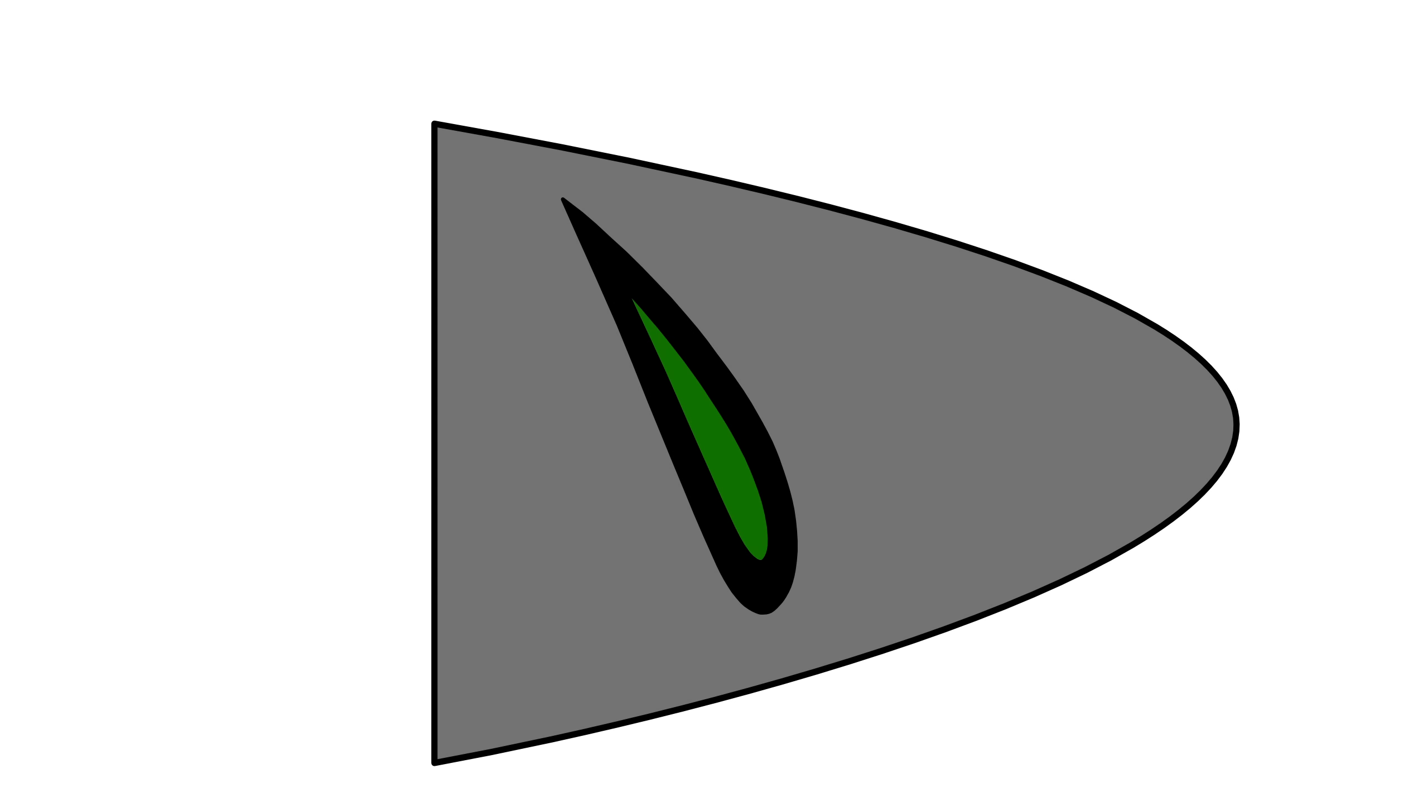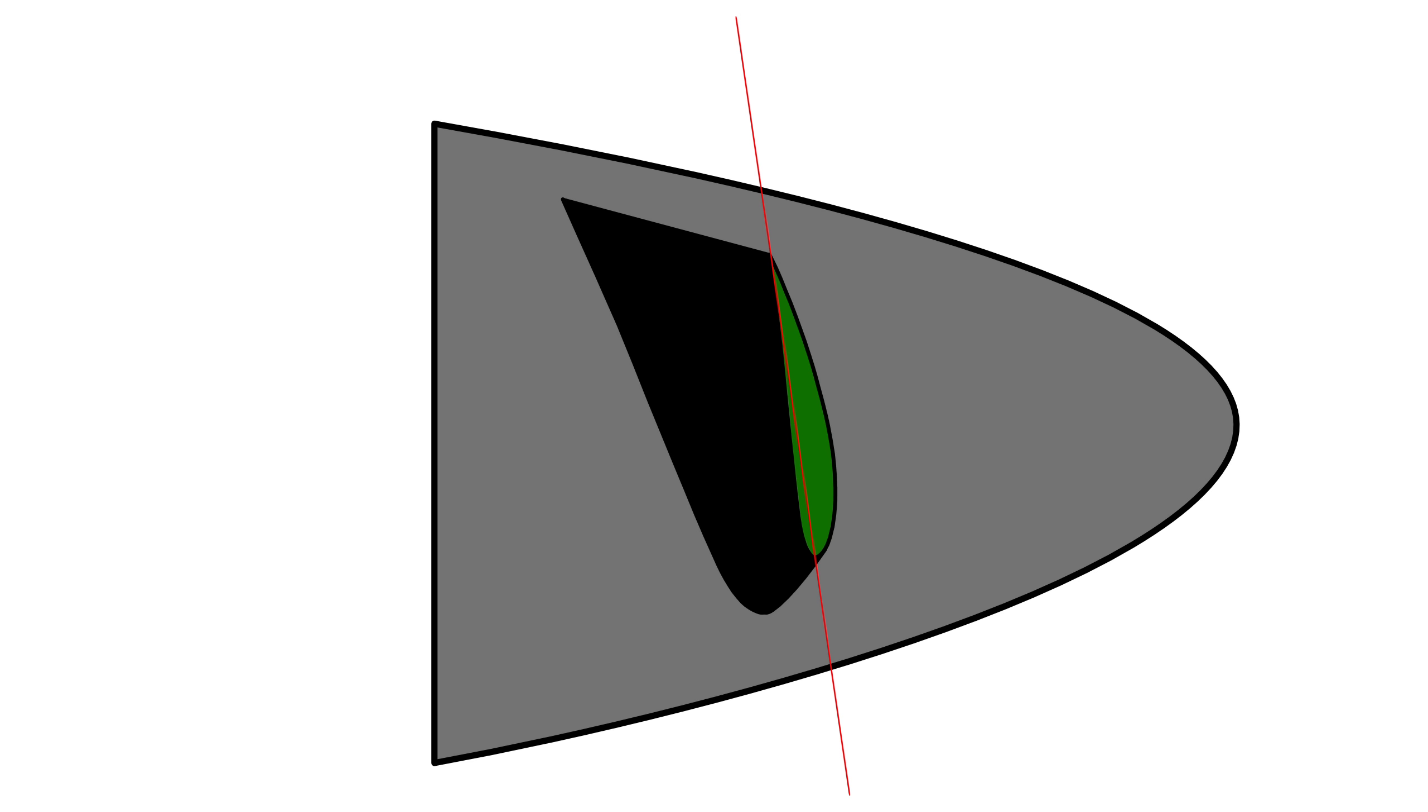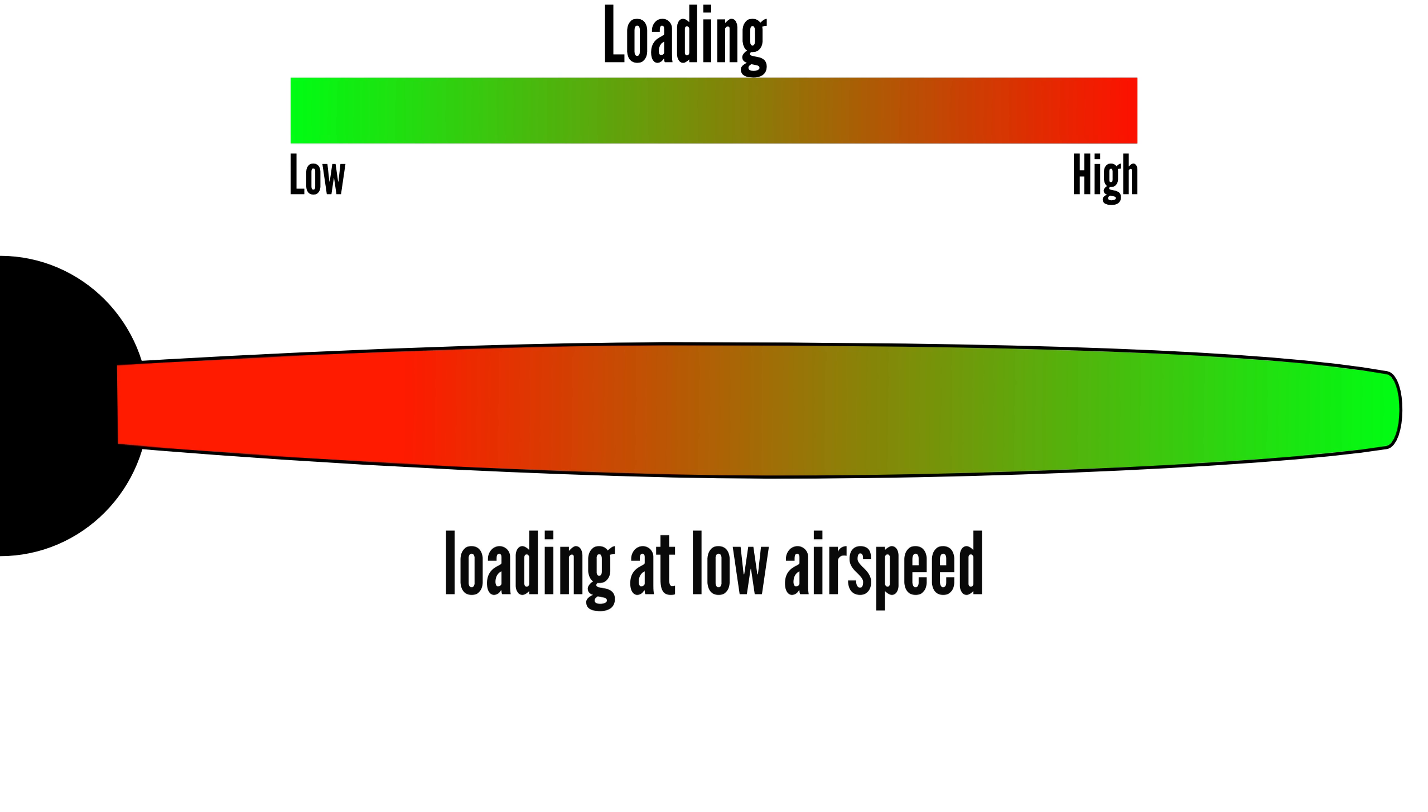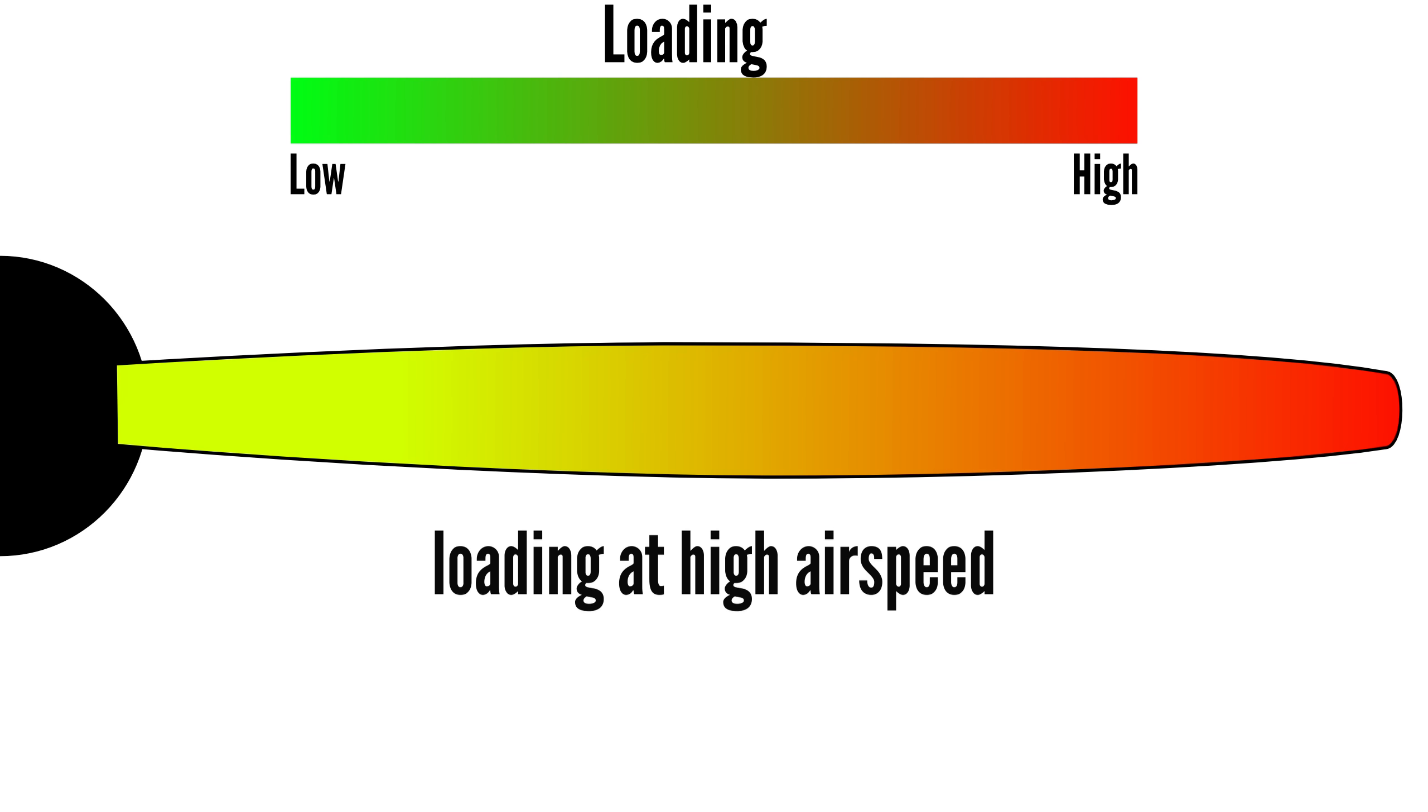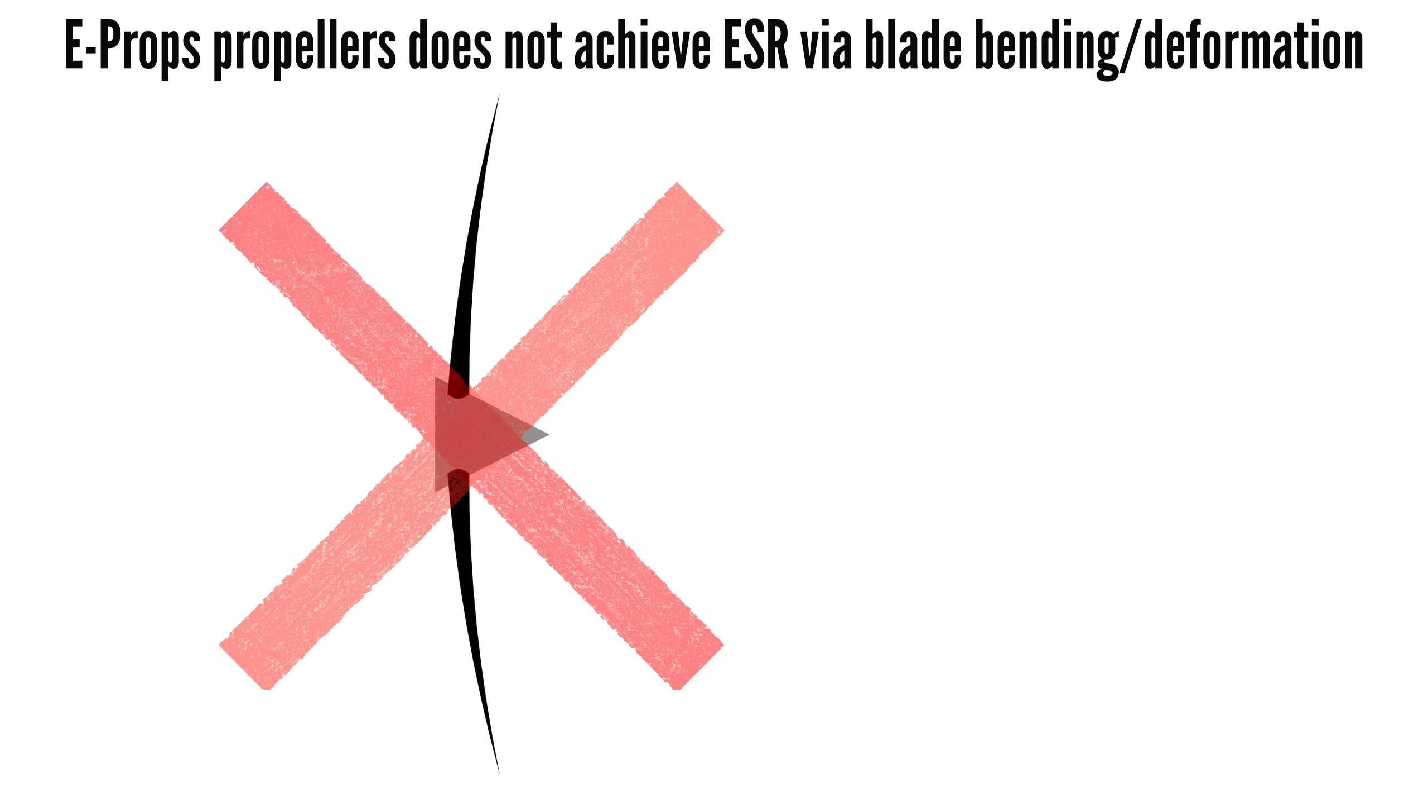However, this approach comes with some drawbacks. As the blade flexes forward, it lowers the pitch angle, but the blade tips tend to flex more than the blade root. This means the angle of attack at the blade tips decreases more than at the root, leading to uneven loading across the blade, something E-PROPS have gone to great lengths to avoid. Because of this, E-PROPS does not rely on blade bending to achieve the ESR effect.